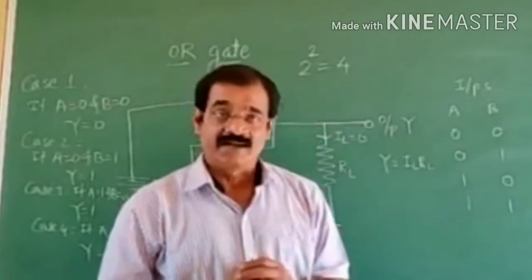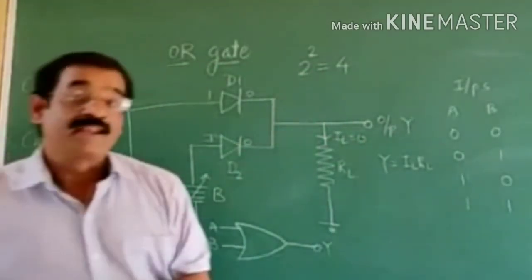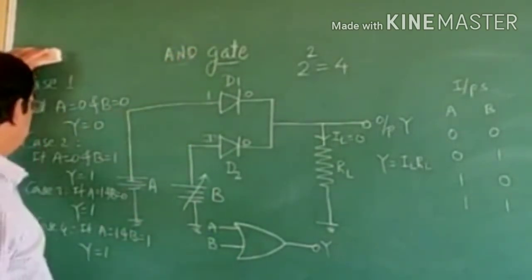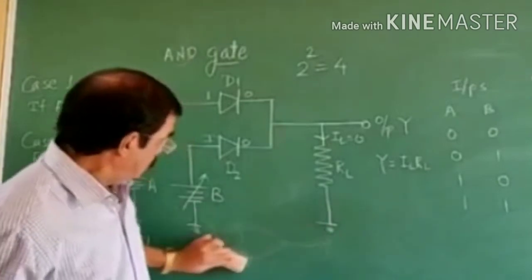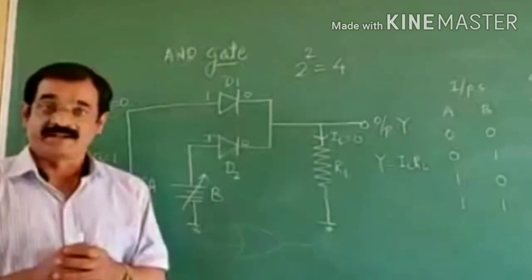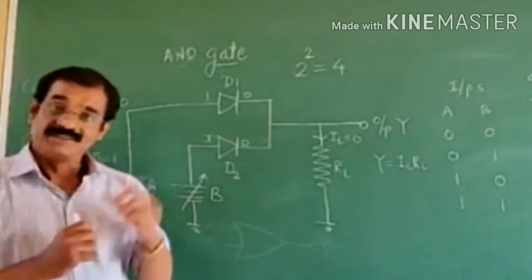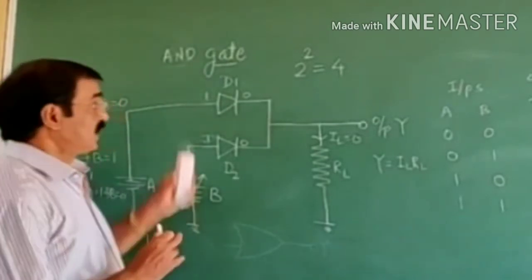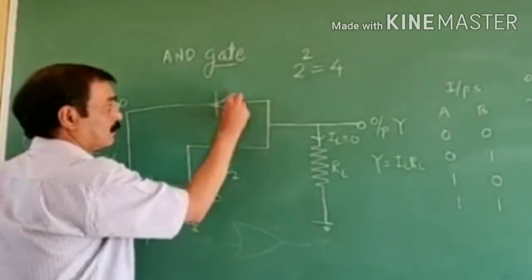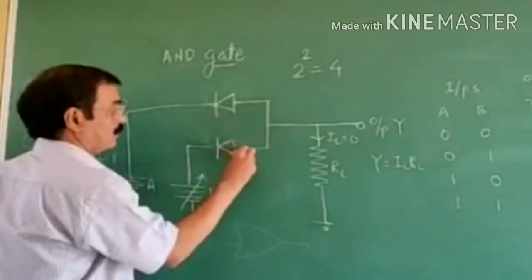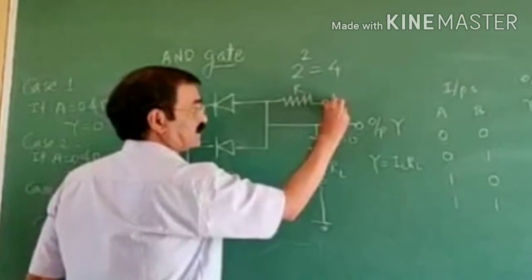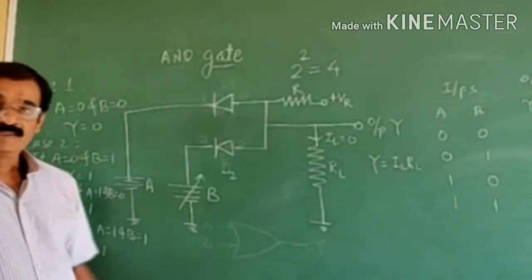Now we will see the second gate — that is the AND gate. You know this is the diagram of the OR gate, so to get the diagram of the AND gate, a little modification should be done. First, reverse both the diodes D1 and D2. Then connect resistor R and reference voltage source VR. This is the diagram of the AND gate.